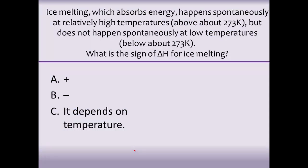Here's a question: ice melting, which absorbs energy, happens spontaneously at relatively high temperatures but does not happen spontaneously at low temperatures. What is the sign of delta H for ice melting? Remember, delta H is going to be negative if we're releasing energy and positive if we're absorbing energy. Since the question tells us that ice melting absorbs energy, our delta H is going to be positive.